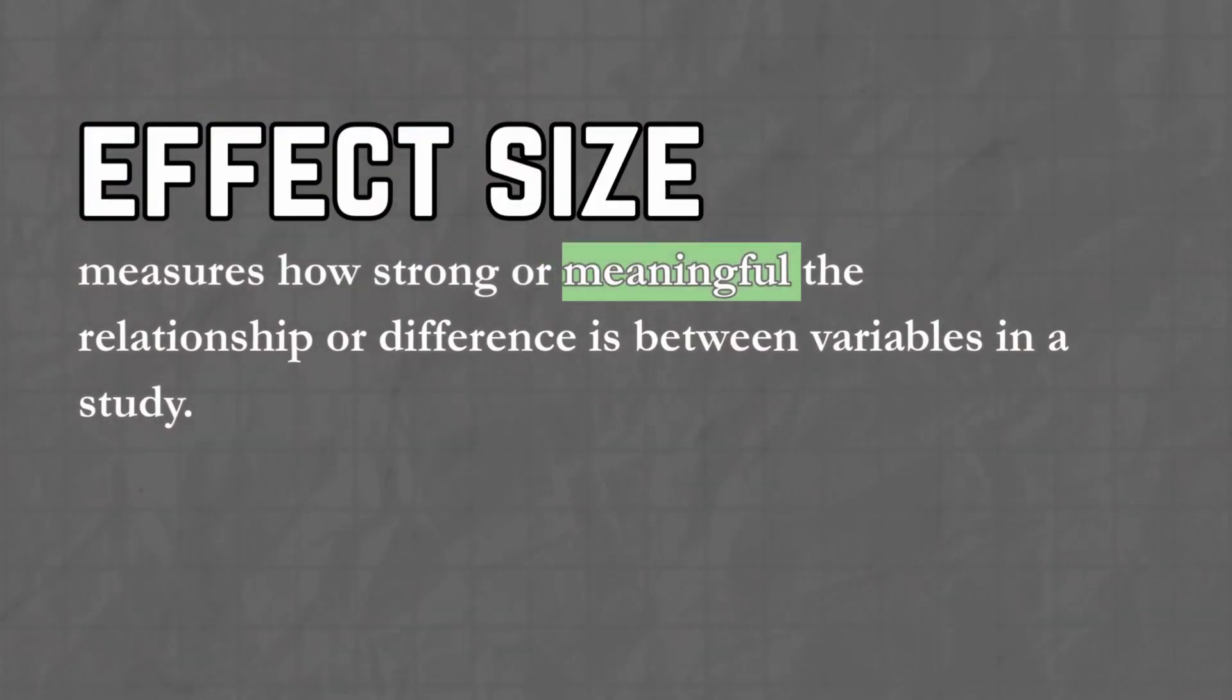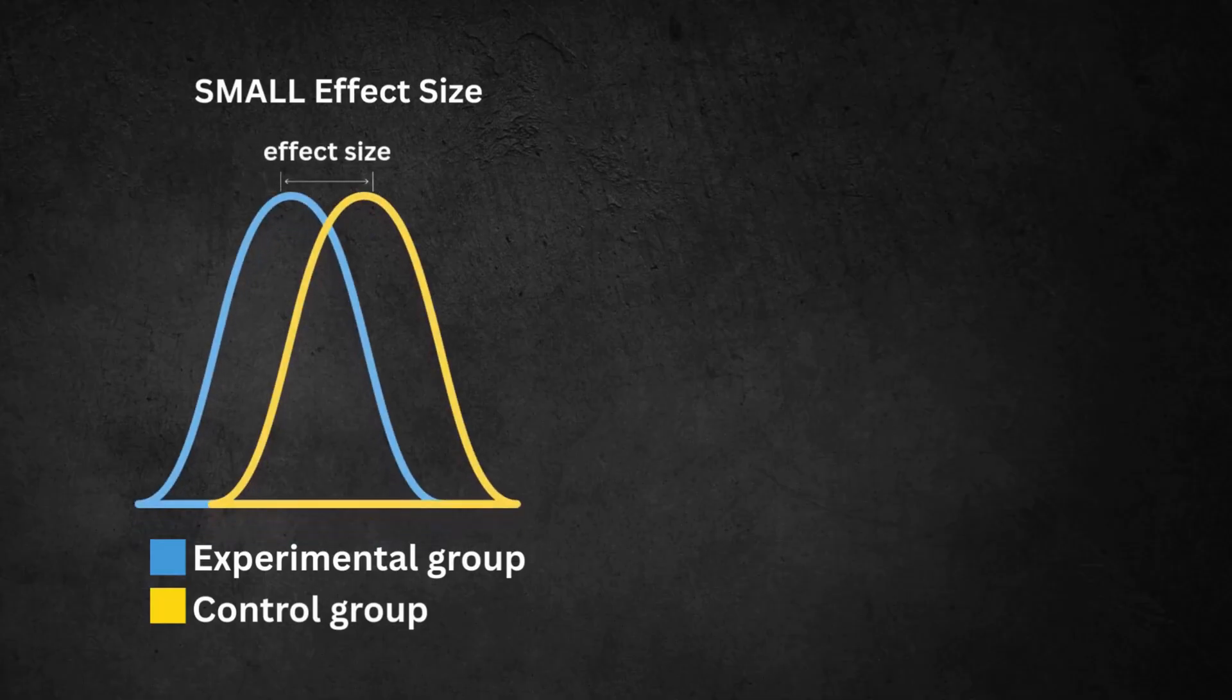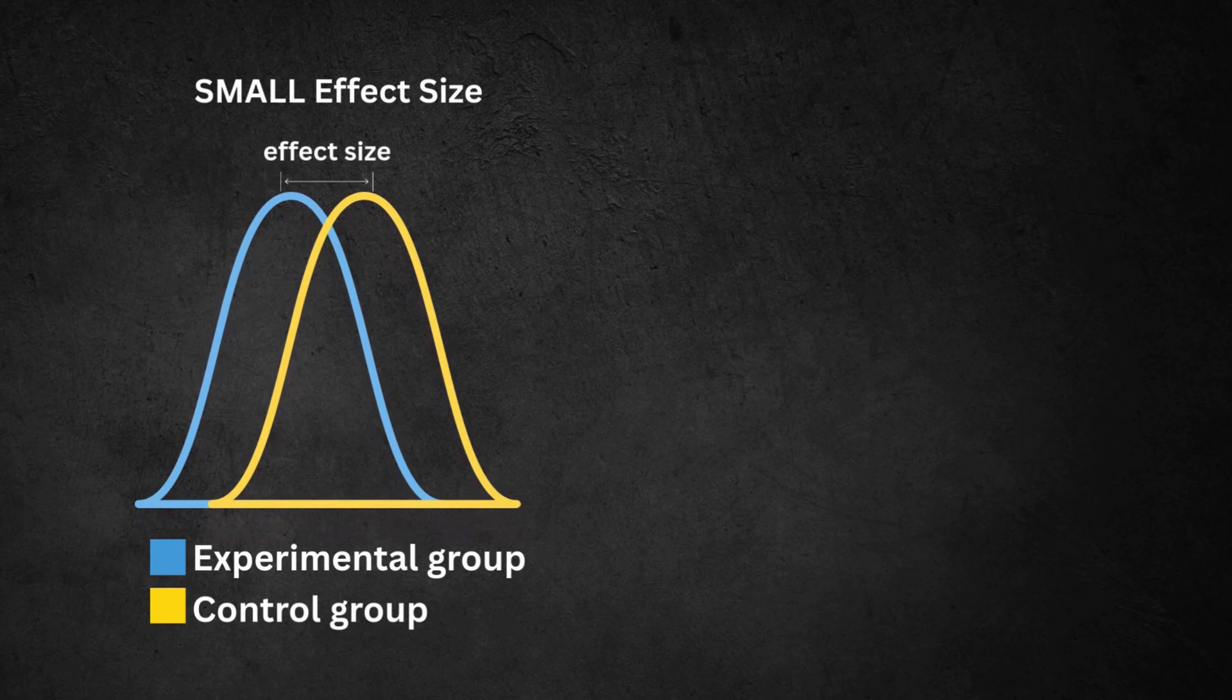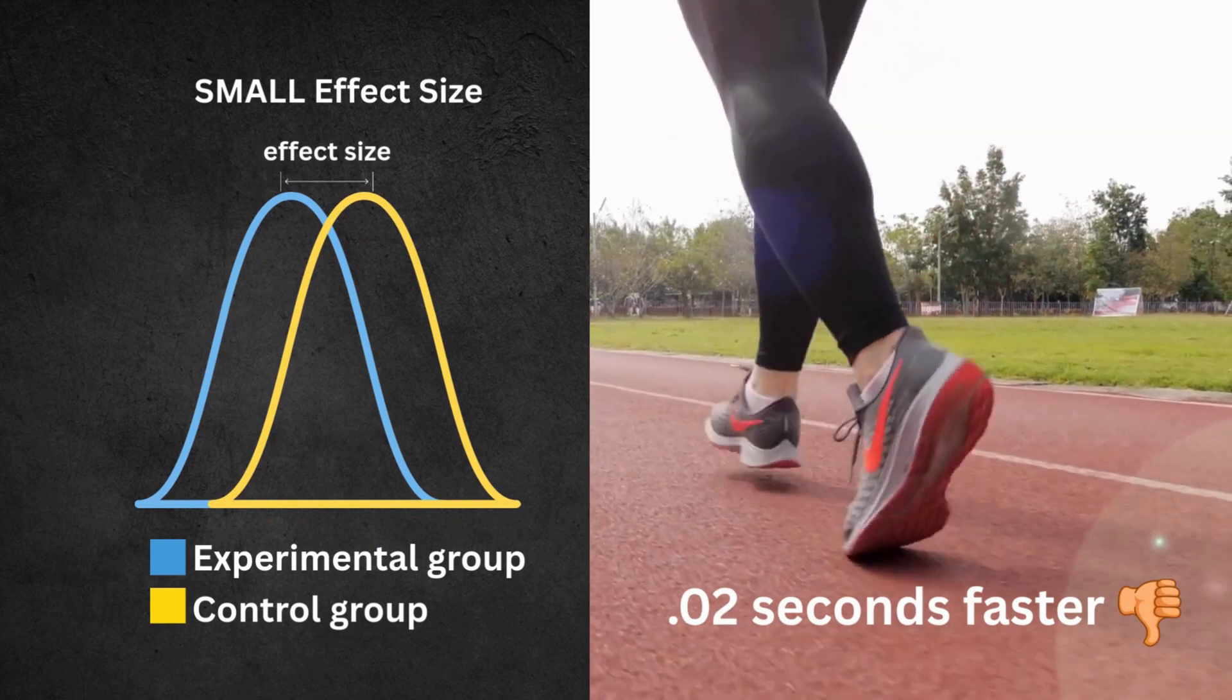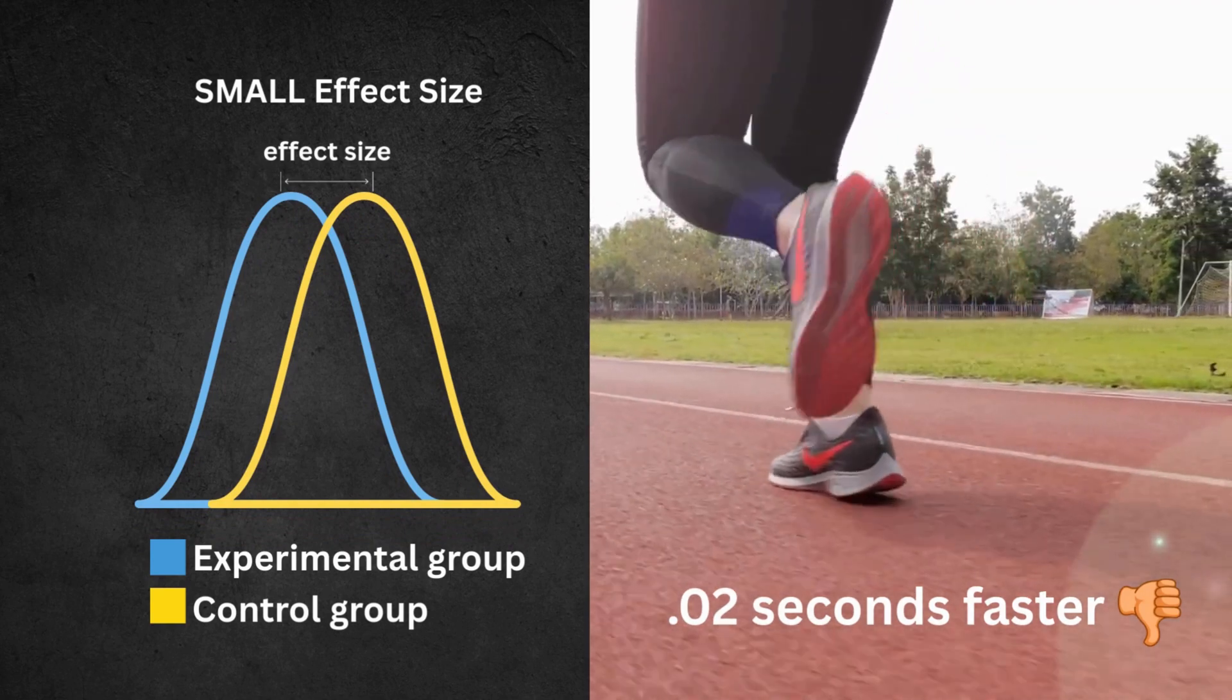But hold up. Just because a result is statistically significant doesn't mean it's life changing. Sometimes it's more like technically true, but barely noticeable. That's why we also look at something called effect size. Because not all results are created equal. A small effect size means the difference is real, but super tiny. Like drinking a brand new energy drink and running .2 seconds faster than your mile. Technically faster, but are we impressed?